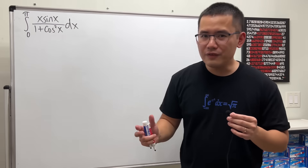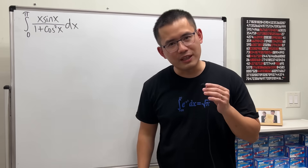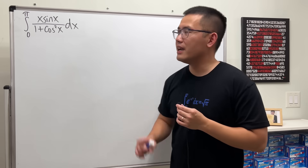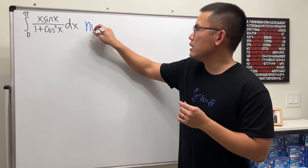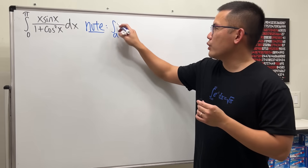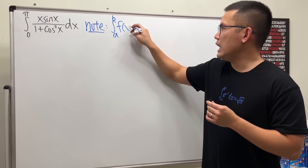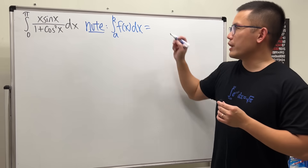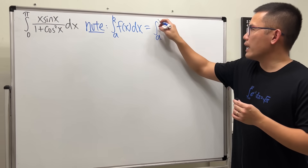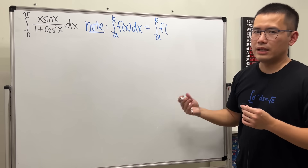Whenever we're trying to solve a hard definite integral, we can use some integral properties. The one we'll use is: the integral from a to b of f(x) is actually equal to the integral from a to b of f(a + b − x).